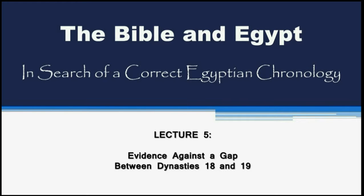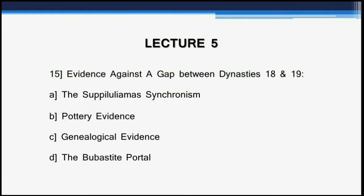These next two lectures will be akin to a court case. In this lecture we will hear from the prosecution against Velikovsky's view of a gap between dynasties 18 and 19, and hear from the defense of Velikovsky's position who will cross-examine the prosecution's evidence. In the next lecture we will hear from the defense — the evidence supporting a gap between these two best-documented but most controversial dynasties — before concluding comments. Lecture 5 examines the evidence put forth by those who do not believe there is a gap between dynasties 18 and 19.